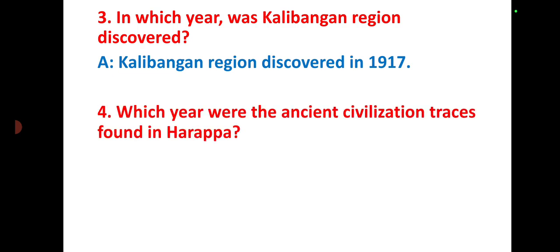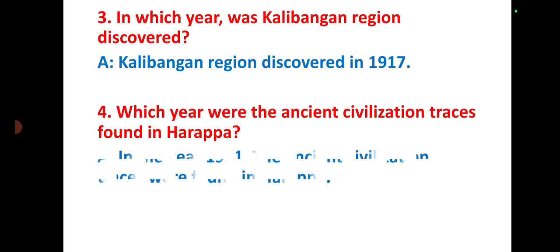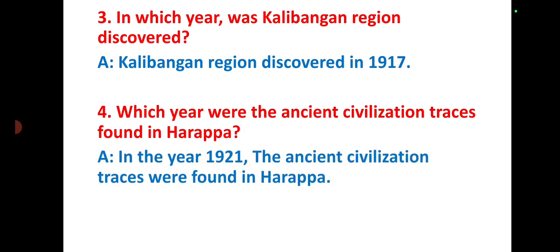In which year were the ancient civilization traces found in Harappa? In the year 1921, the ancient civilization traces were found in Harappa.